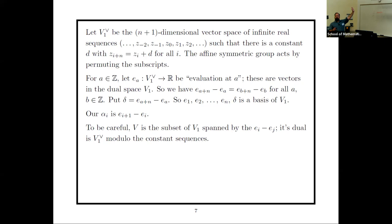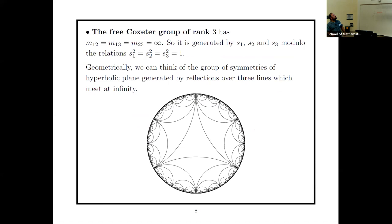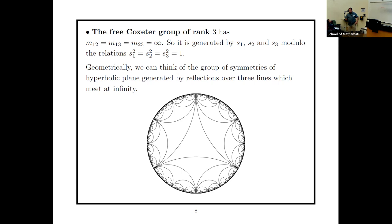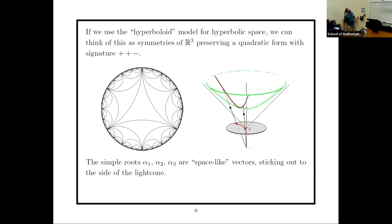The third example is the free Coxeter group of rank 3, where all mᵢⱼ = ∞. The only relations are s₁² = s₂² = s₃² = identity. Geometrically, take an ideal triangle in the hyperbolic plane (all three angles zero) and reflect over its sides — the resulting hyperbolic reflection group is the free Coxeter group of rank 3. This might seem to violate linearity, but the next slide addresses that.